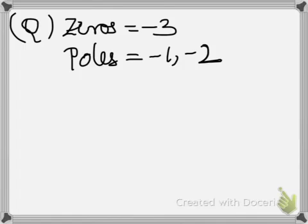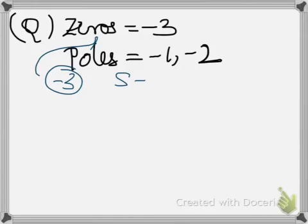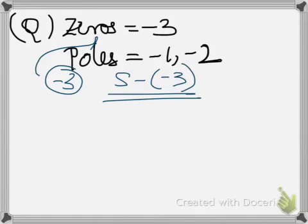First of all let us write down the numerator of the transfer function. We know that the zeros of a transfer function are the roots of the numerator. So minus 3 is the root of the numerator. Therefore s minus (minus 3) will be the numerator, which is s plus 3.